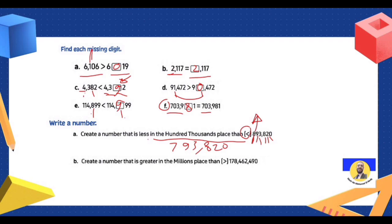Create a number that is greater in the millions place. Where is millions? Ones, tens, hundreds, thousands, ten-thousands, hundred-thousands, millions. So write a number where the millions digit is greater than 8 — greater than 8 is 9. For example: 9,179,462 and the answer is 490 — any number with 9 in the millions place works.